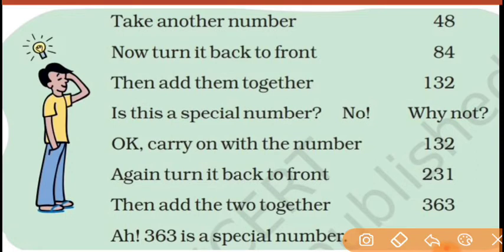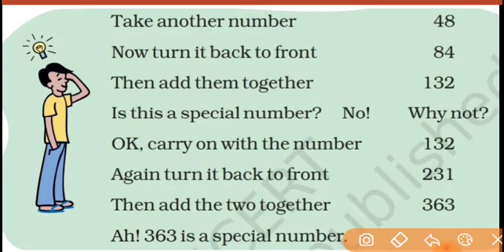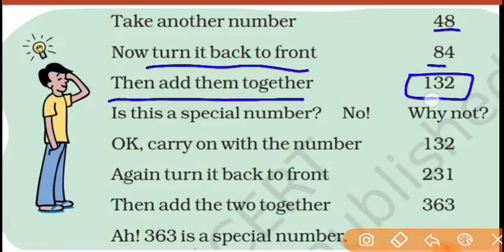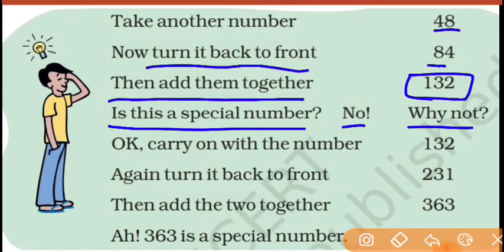Next, let's check another number: 48. Is 48 a palindrome? No — forward or backward it is not the same. So what will you do? Turn it back to front — 48 becomes 84. Now add them together: 48 plus 84 equals 132. Now check — is 132 a palindrome? No, it's not same from left to right and right to left. So we have to carry on.